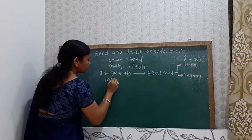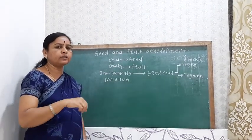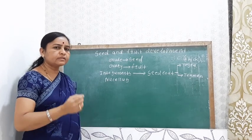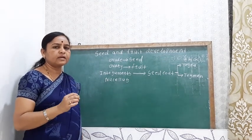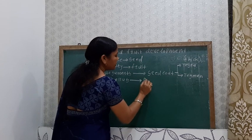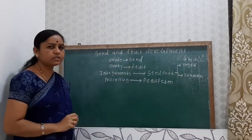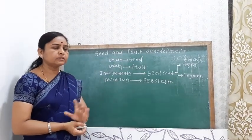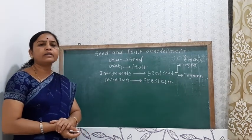Inside the integuments there is the nucellus. In some seeds, the nucellus is mainly used for the development of endosperm and the embryo, but in some seeds the nucellus remains as it is — persisting as a thin papery covering known as the perisperm. This perisperm occurs mainly in black pepper.